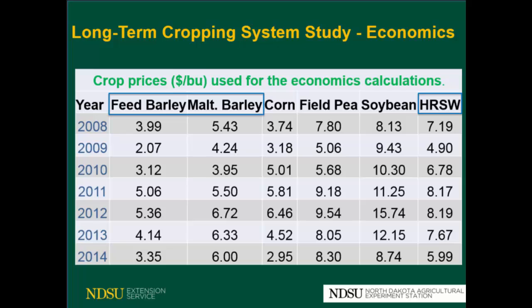Based on protein content, we classify barley as feed or malting barley. If the barley had more than 12% protein, it was classified as feed; if it had less, it was classified as malting barley. That's why we have two different prices. For spring wheat, we took into consideration an average penalty of 8 cents for each 1.5% when the protein content was below 14%.